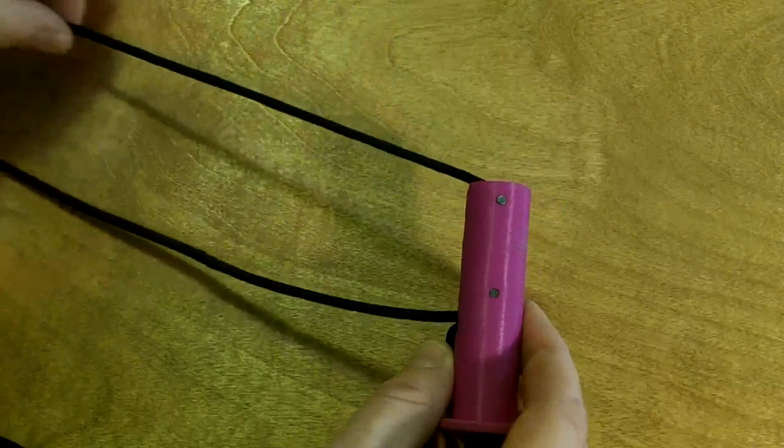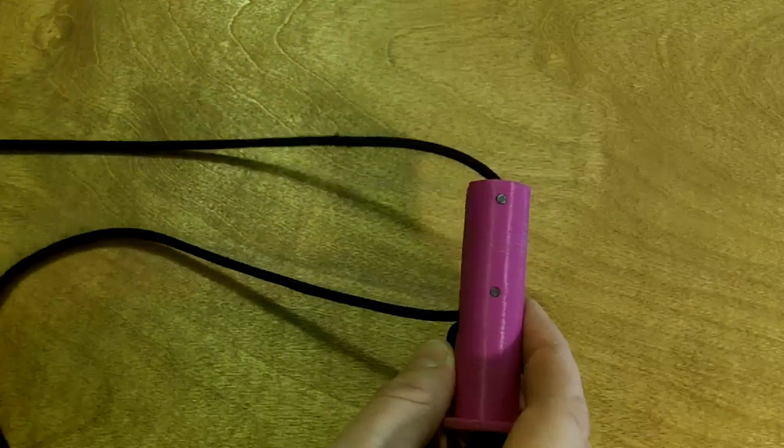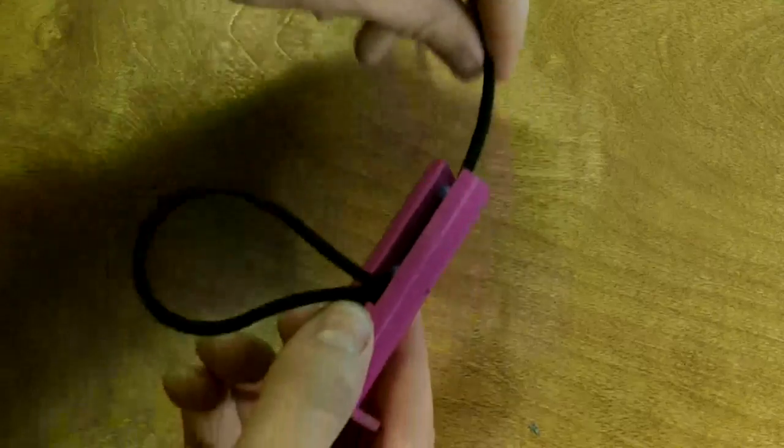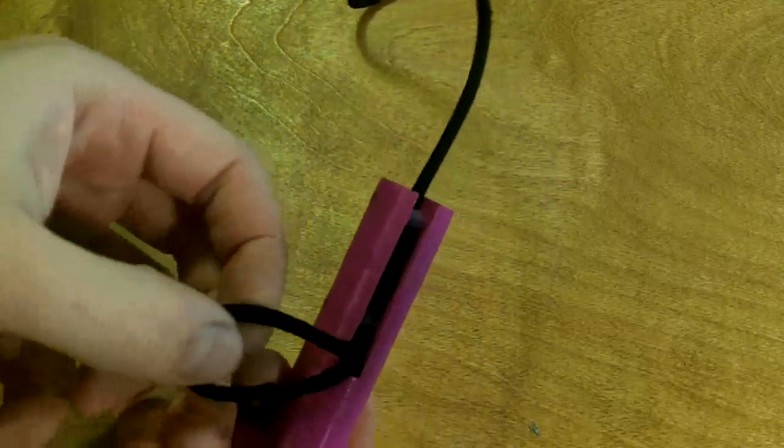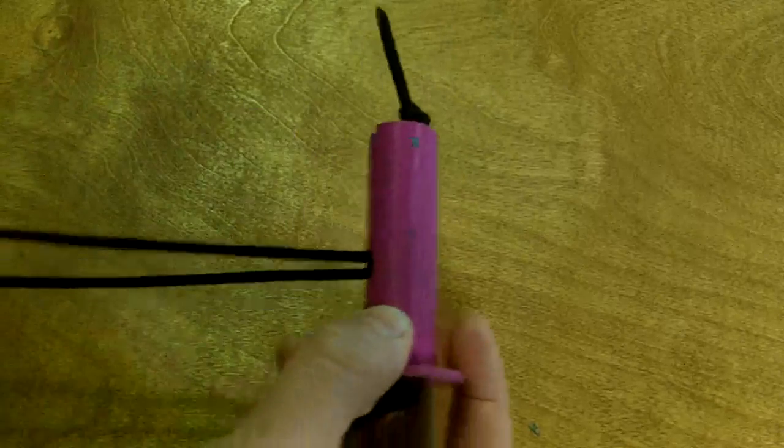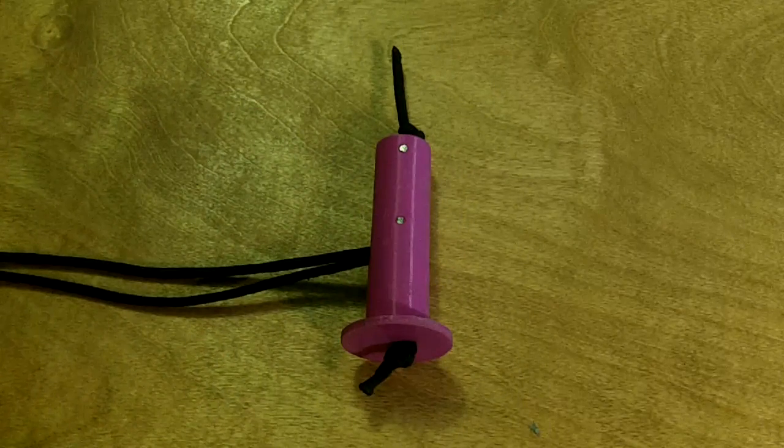Pull that and pull all that friction out of there. So this is just paracord. Anyway, you can see it pops out right there. And that's pretty much all there is to that.